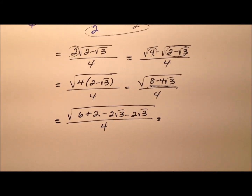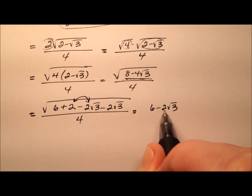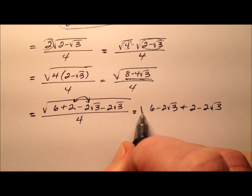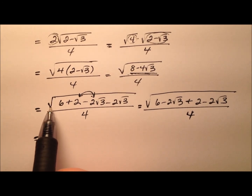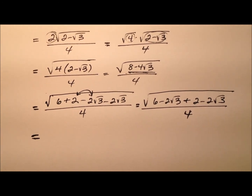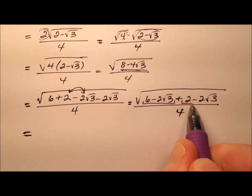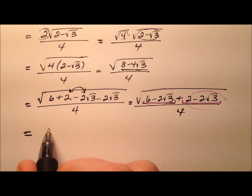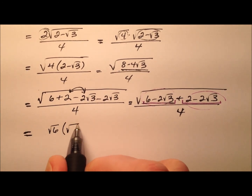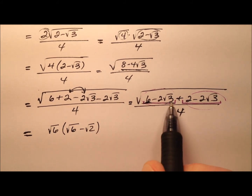Why do that? I'm going to reorder the two middle terms in an effort to make something I can factor. To get rid of a radical, you need to be taking the square root of a perfect square. So let's factor and group these terms — the first two and last two together. From this first pair, let's factor out the square root of 6, leaving square root of 6 minus square root of 2. The square root of 6 times square root of 6 is 6, and square root of 6 times square root of 2 is square root of 12, which reduces.